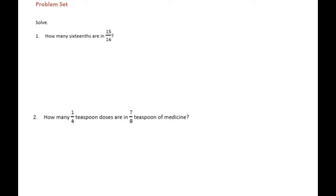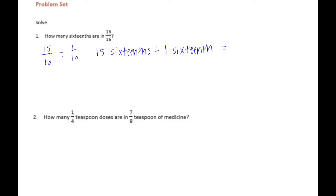Sixth grade module 2 lesson 5 problem set, number 1: how many sixteenths are in 15 sixteenths? We have 15 sixteenths divided by 1 sixteenth. You can cancel each other out — 15 divided by 1 is equal to 15, so there would be 15 of them.